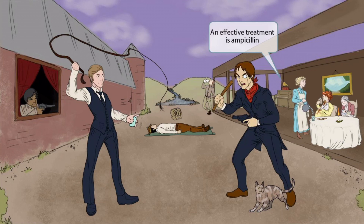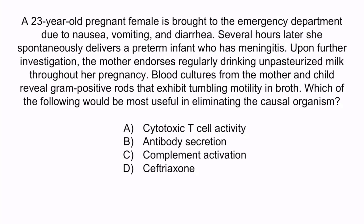Now that we've covered the image, let's review with a question. A 23-year-old pregnant female is brought to the emergency department due to nausea, vomiting, and diarrhea. Several hours later, she spontaneously delivers a preterm infant who has meningitis. Upon further investigation, the mother endorses regularly drinking unpasteurized milk throughout her pregnancy. Blood cultures from the mother and child reveal gram-positive rods that exhibit tumbling motility in broth. Which of the following would be most useful in eliminating the causal organism? A. Cytotoxic T-cell activity. B. Antibody secretion. C. Complement activation. Or D. Ceftriaxone.